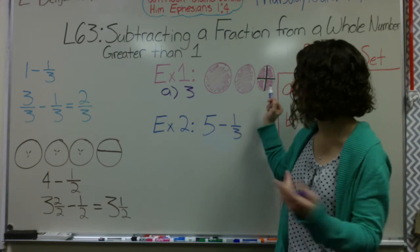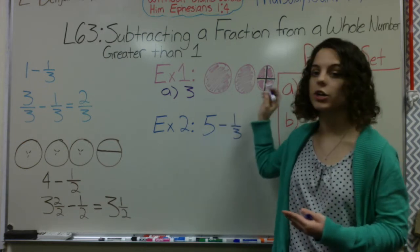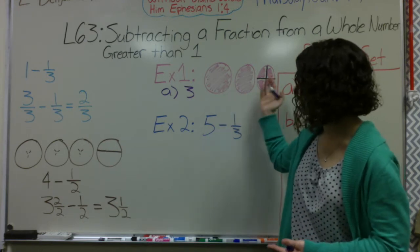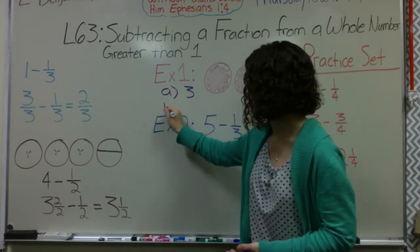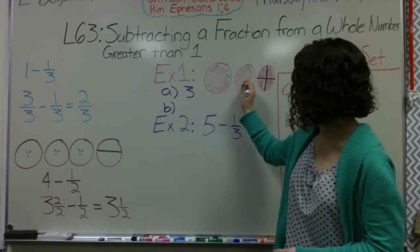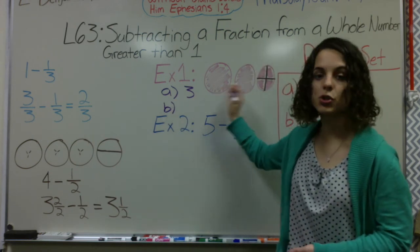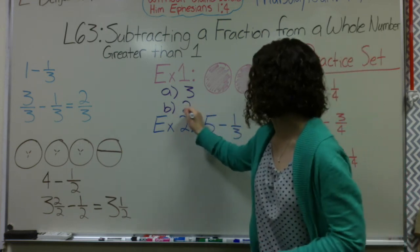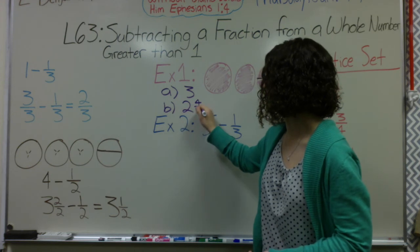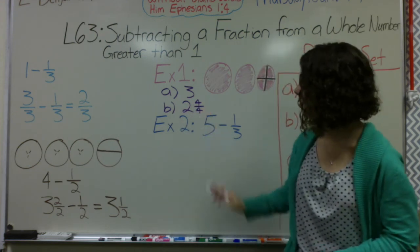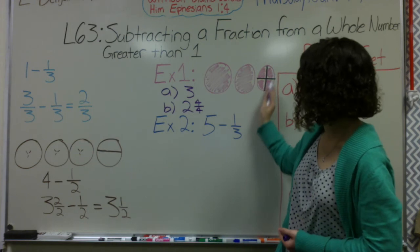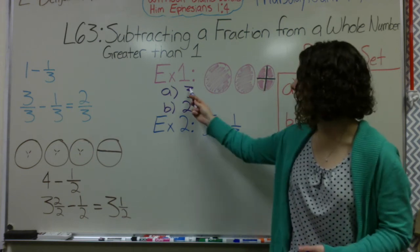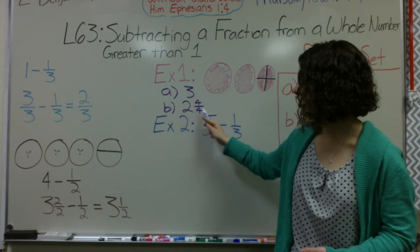That way when we go back over this in class you can look at what kind of problems we have been going over. This is the same thing as 3 and it is also the same thing written in the mixed number form as 2 whole circles and 4 fourths. So 2 and 4 fourths is the same thing as a 3. Then I would be able to subtract either 1 fourth or 2 fourths or 3 fourths in order to get an answer. And I would just simply change the 3 to be 2 and 4 fourths.